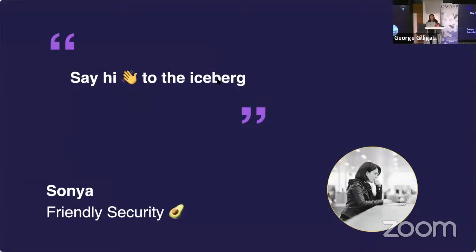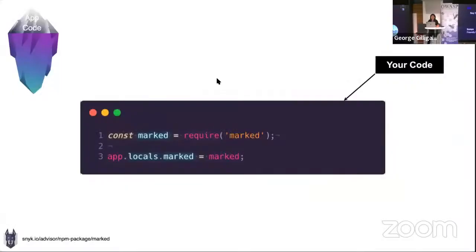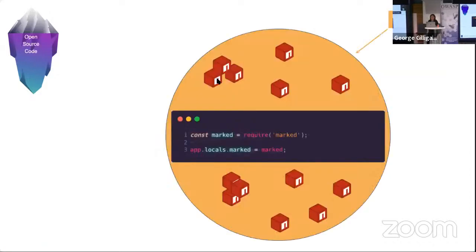Let's try to understand how this is possible — and say hi to the iceberg. At the tip of the iceberg, you have your code: the proprietary code you write at your company, which could potentially have security vulnerabilities. A piece of code importing a dependency is a segue to the layer below — the open source code. This layer sits beneath the application code on the iceberg.